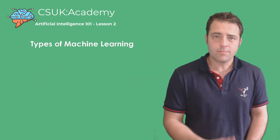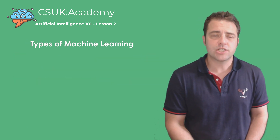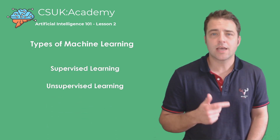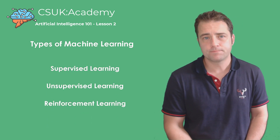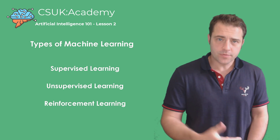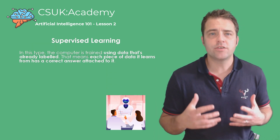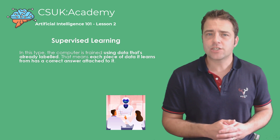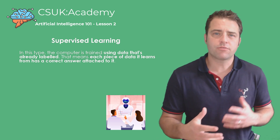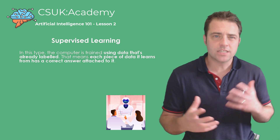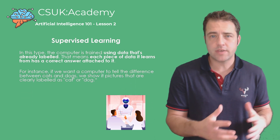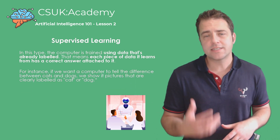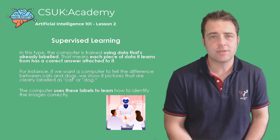There are three main types of machine learning: supervised, unsupervised, and reinforcement learning. In supervised learning, the computer is trained using data that's already labeled. Think of it as teaching a computer to differentiate between cats and dogs by showing it labeled pictures of each. The computer uses these labels to learn and identify the images correctly.